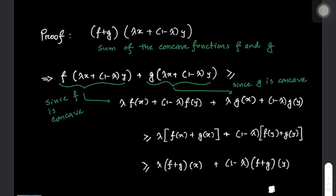We can see that we are taking the linear combination of these two evaluation points with lambda, and these values are less than or equal to the left hand side quantity. As a result, we have actually proved that the sum of two concave functions is a concave function.